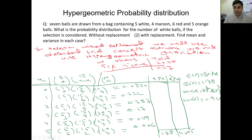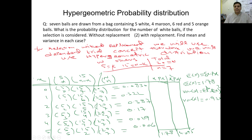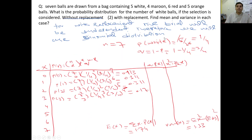Now, for the with-replacement scenario, the trials will be independent, the success probability will not change. When the success probability is not changed and the trials are independent and with replacement, then we need to use binomial distribution.